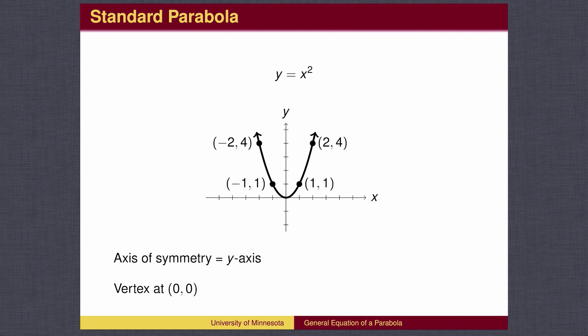From the vertex, there are points that go left and right 1 and up 1 and also points that go left and right 2 up 4. We will use these points (1, 1) and (2, 4) to help us with other graphs.